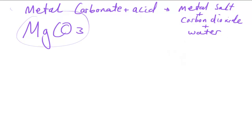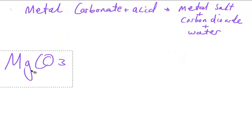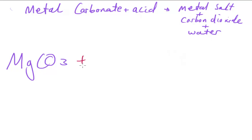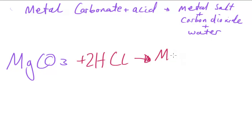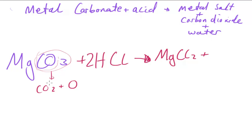Using MgCO₃ reacting with HCl: since it forms MgCl₂ we need 2 HCl. The products are MgCl₂ (the metal salt) and CO₂. Looking carefully at CO₃, the CO₂ part forms carbon dioxide and the remaining oxygen atom is used to form water, H₂O.